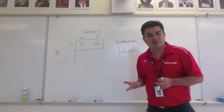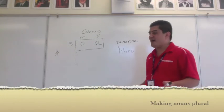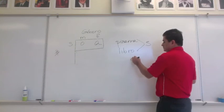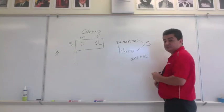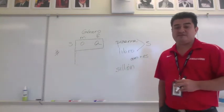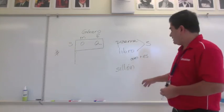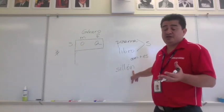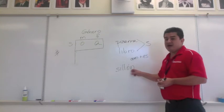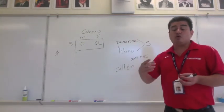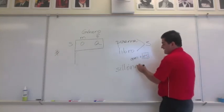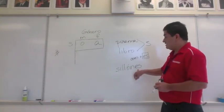Both 'pizarra' and 'libro' are singular. To make a word plural in Spanish, in most cases you simply add an 's.' However, if the word ends in a consonant, you add 'es.' For example, 'sillón' means armchair — you can't just add an 's' because you cannot have two consonants next to each other in Spanish unless they are in separate syllables. So 'sillón' becomes 'sillones.'